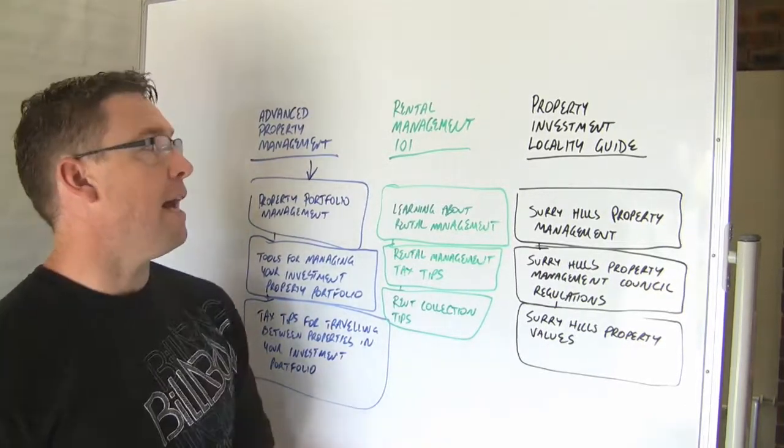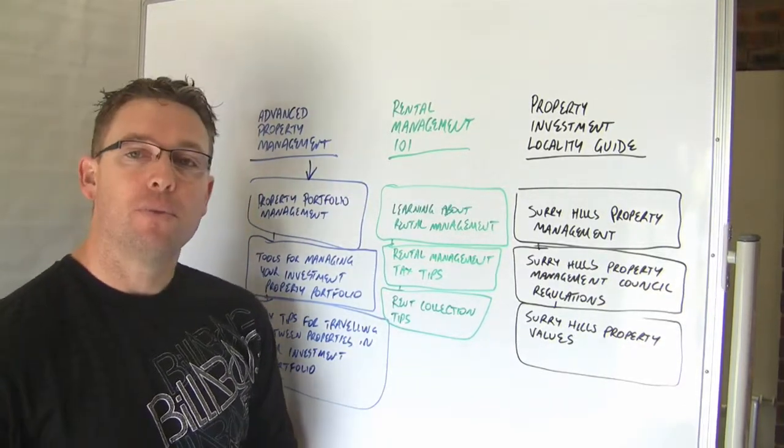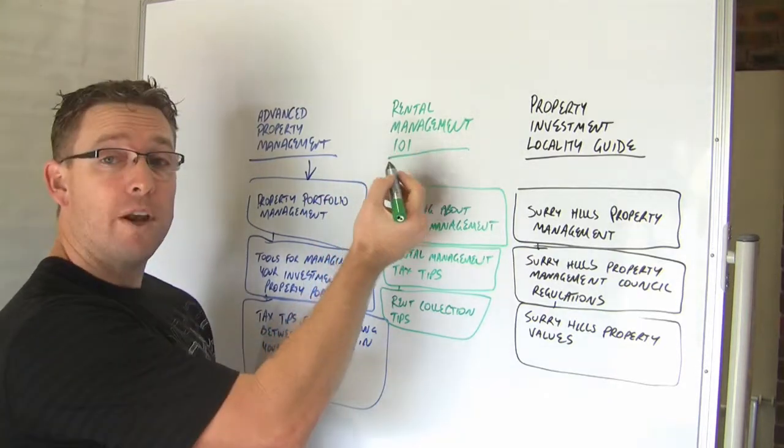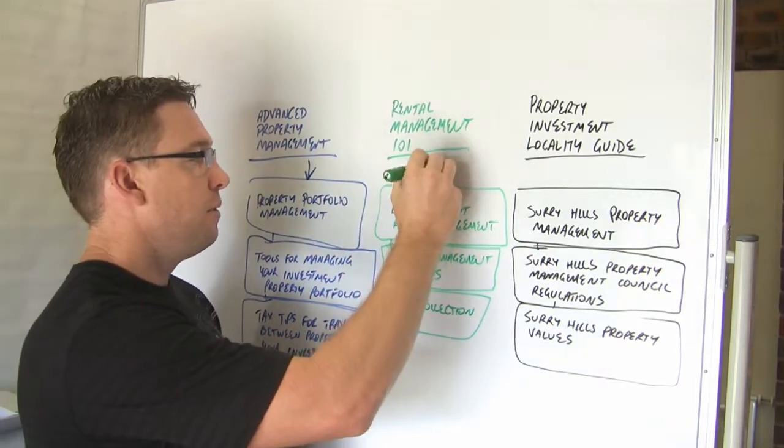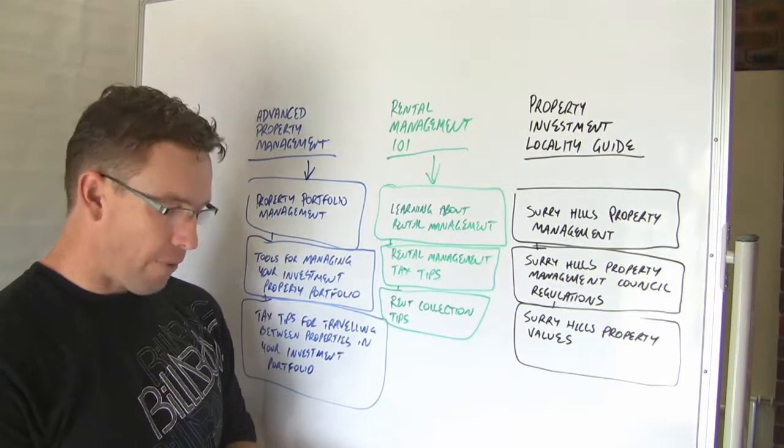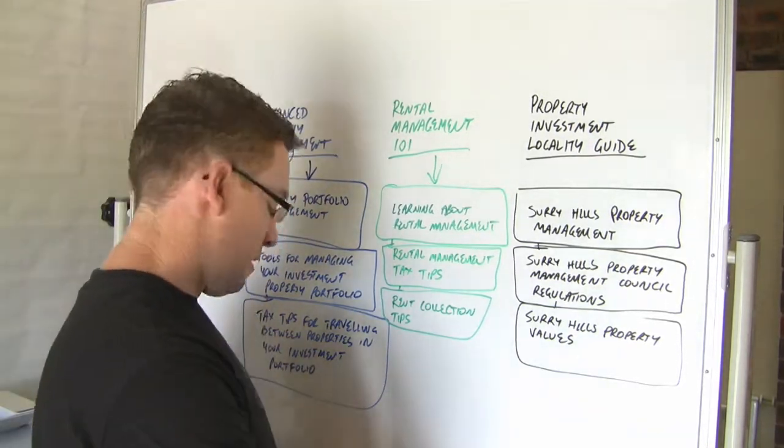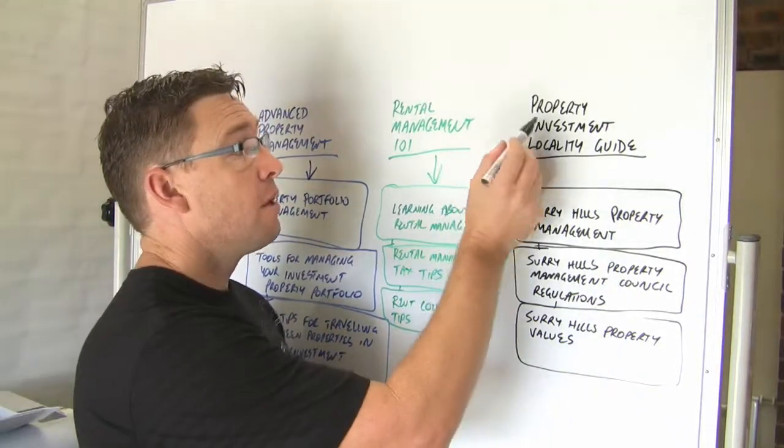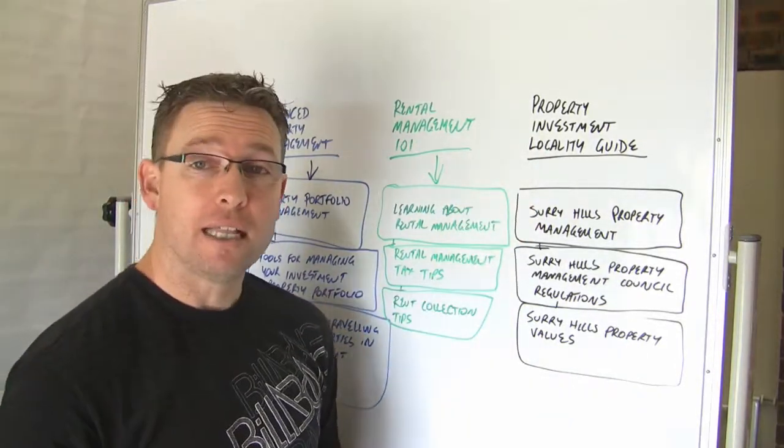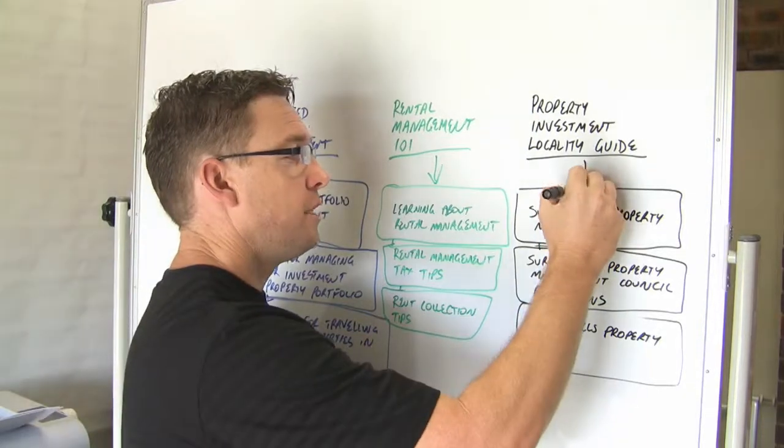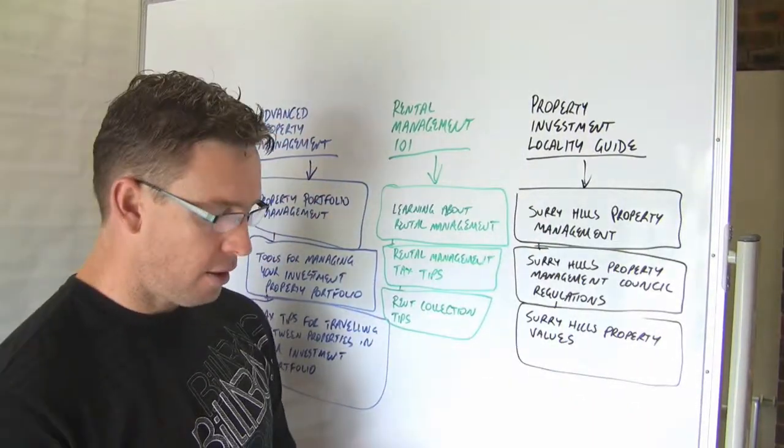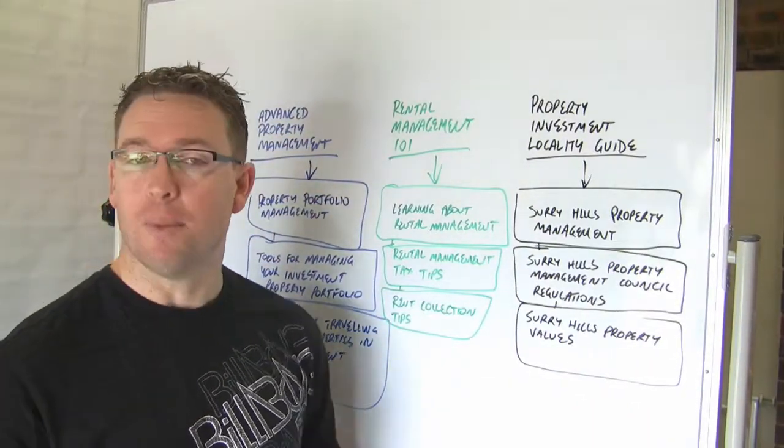Similarly, you could create a navigation item which says rental management 101. And that links through to your cluster of pages about rental management for novices. And finally, you could create a navigation item called property investment locality guide, which links through to your location specific property management information.